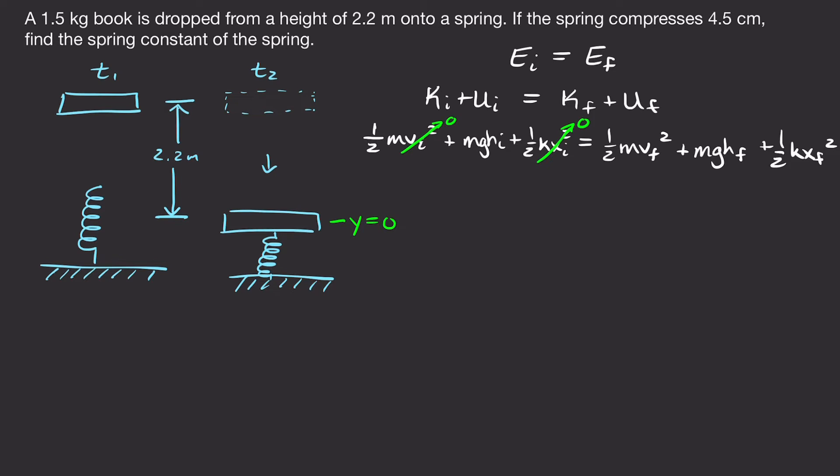At time two, after the book has fallen and compressed the spring, the spring slows down the book and eventually it stops. So the final velocity is zero once the spring is fully compressed and the book is at rest. We called the final height y equals zero, so the final gravitational potential energy is also zero. The only terms that survive are the initial gravitational potential energy and the final elastic potential energy of the spring.